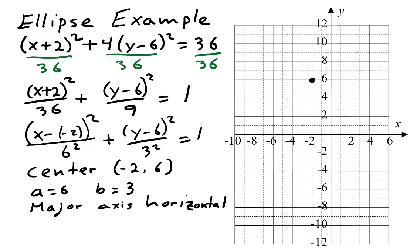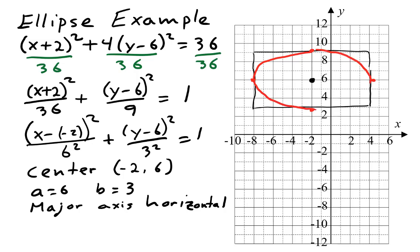Because the denominator under the X squared term is 6 squared, from the center we go 6 spaces to the left and 6 spaces to the right. Because the denominator under the Y squared term is 3 squared, from the center we go 3 spaces up and 3 spaces down. This gives us a box. The ellipse will touch the centers of the sides of the box. These four points where the ellipse touches the box are called the vertices of the ellipse. We draw an ellipse passing through the vertices, looking like a circle that was squished to fit in the box.